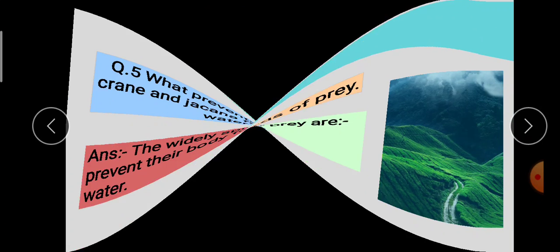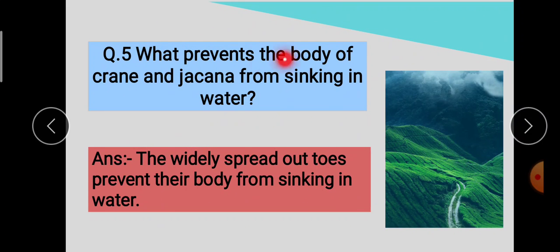Question number 5 is: What prevents the body of crane and jacana from sinking in water? कि जो body है crane और jacana की, वो किसकी help से पानी में नहीं डूबती है, ठीक है? तो answer है: The widely spread out toes prevent their body from sinking in water.